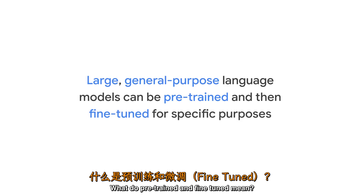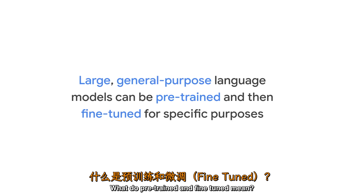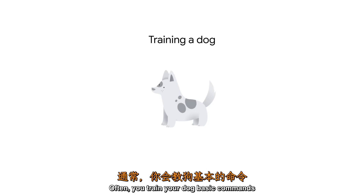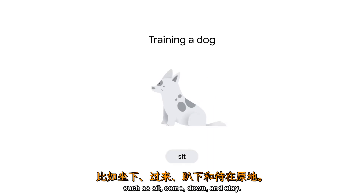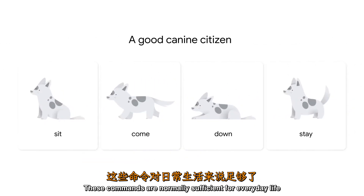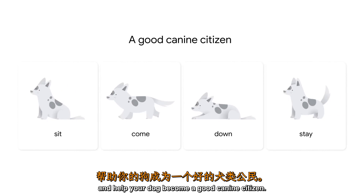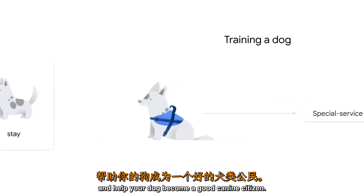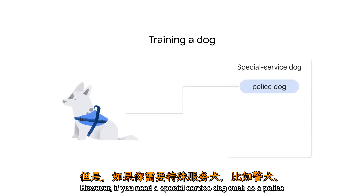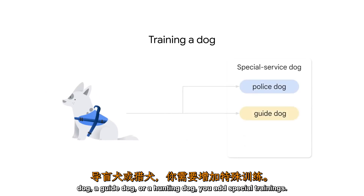What do pre-trained and fine-tuned mean? Imagine training a dog. Often you train your dog basic commands such as sit, come, down, and stay. These commands are normally sufficient for everyday life and help your dog become a good canine citizen. However, if you need a special service dog such as a police dog, a guide dog, or a hunting dog, you add special trainings.